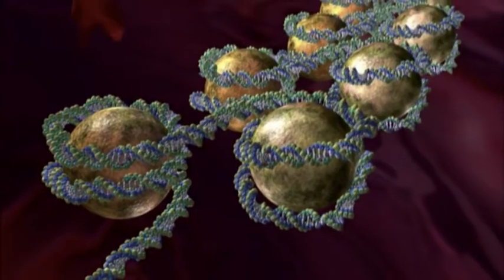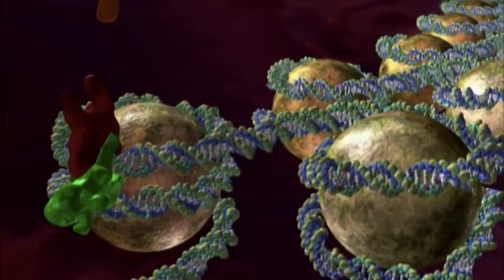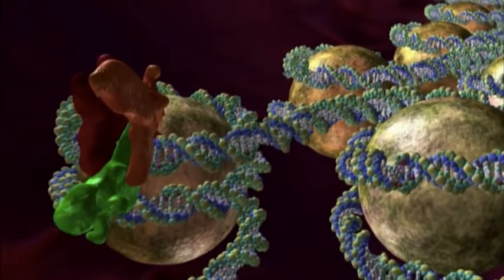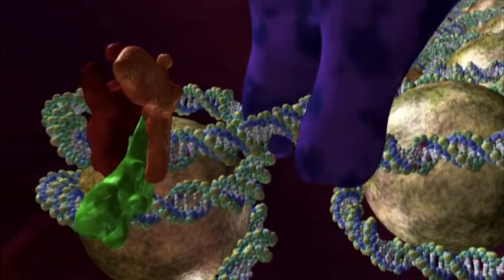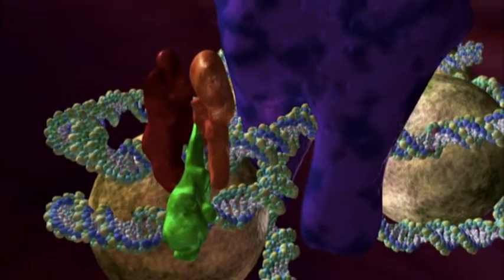For a gene to be turned on, something has to come in and loosen up the right section. Then the cell's machinery can latch on and read the DNA, the first step on the long road to building a protein.